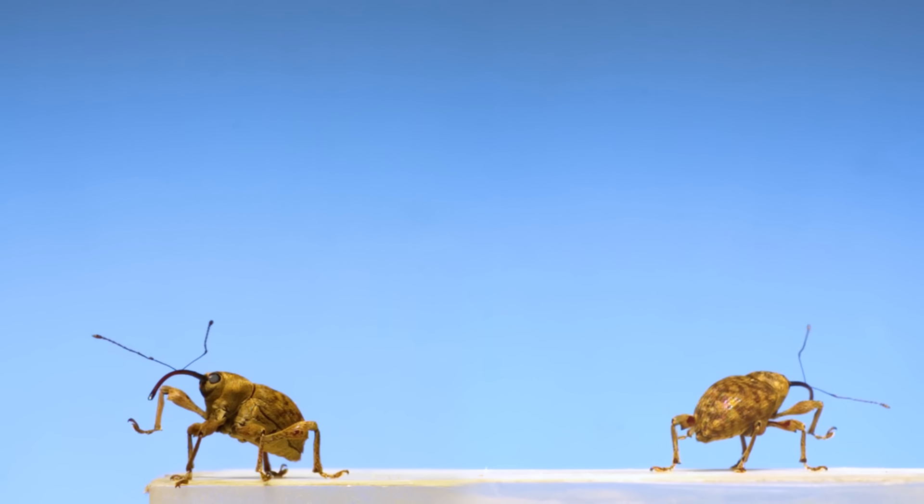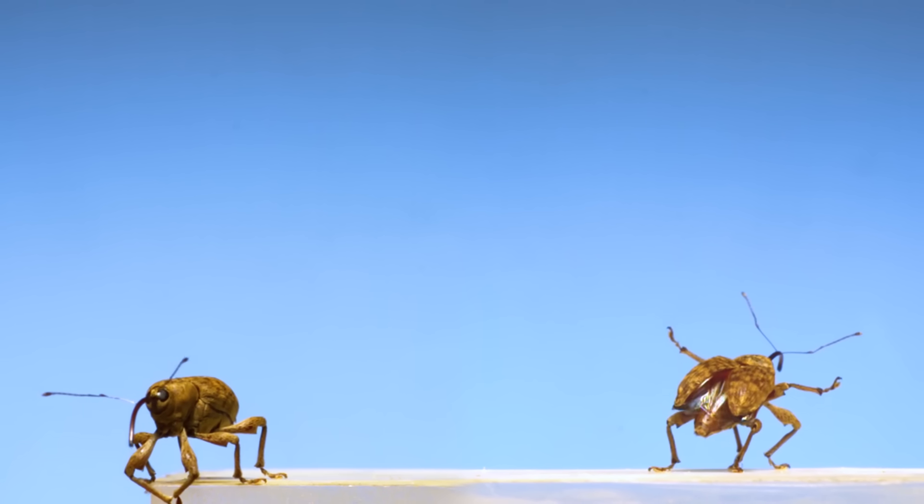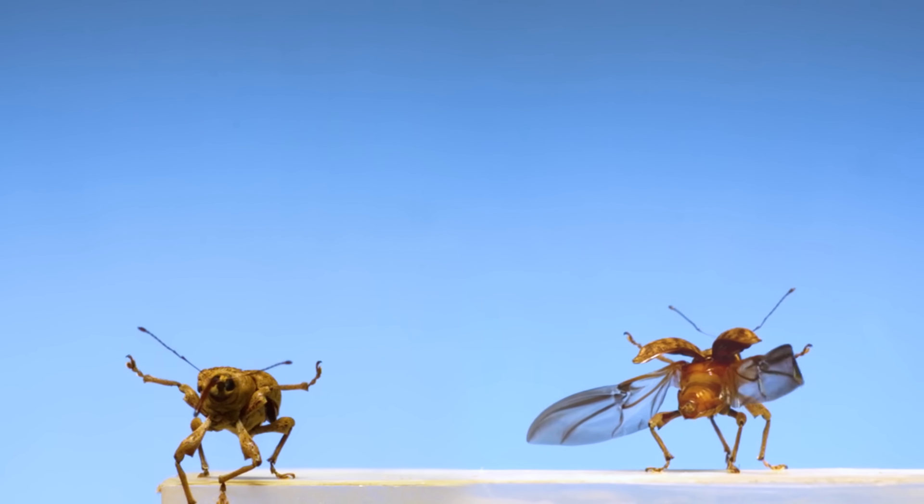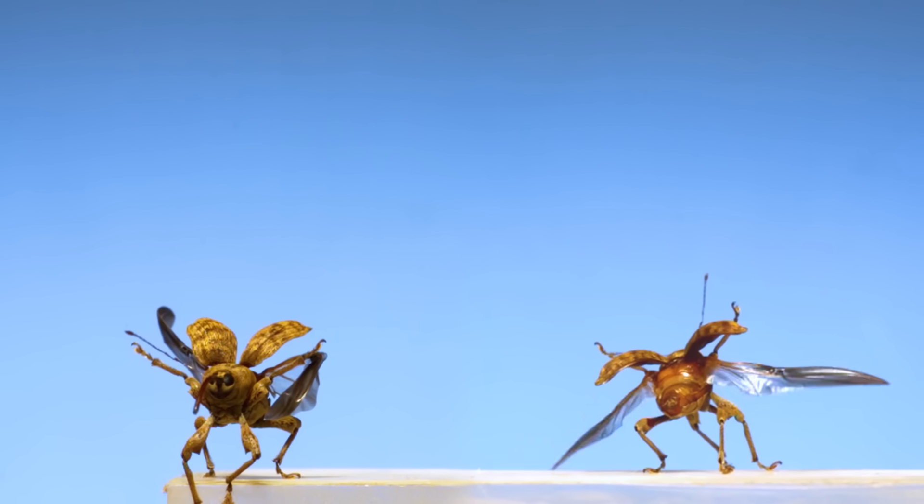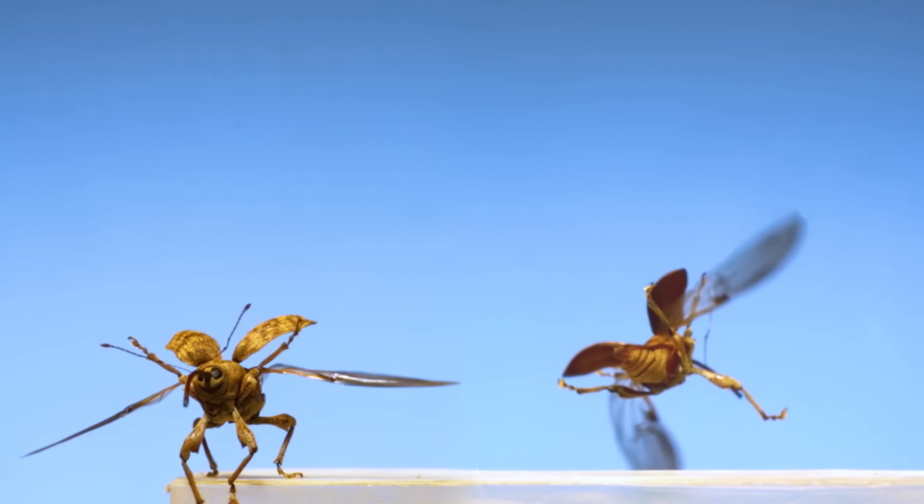So first let's go back to that weevil and watch when the wings come out. When they unfold from underneath the elytra they more than double in length. They're powerful enough to pick the beetle off the ground when it starts flapping.